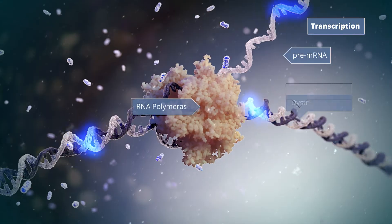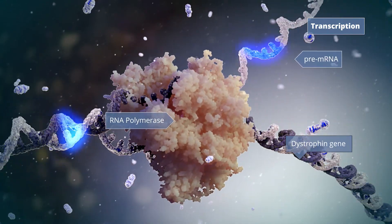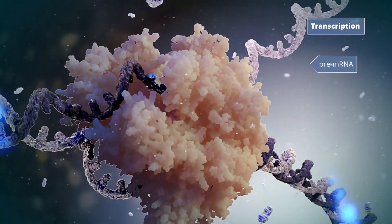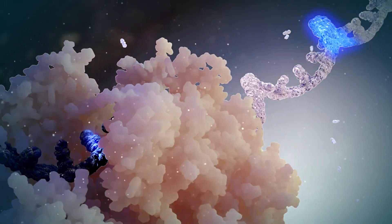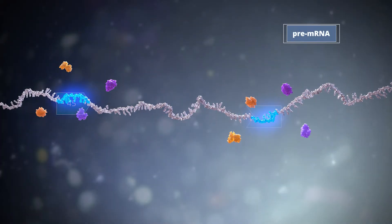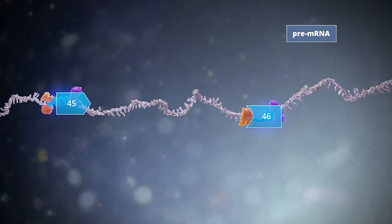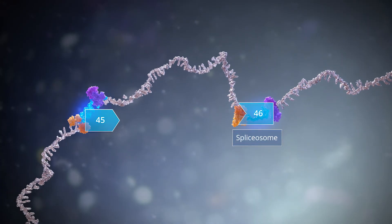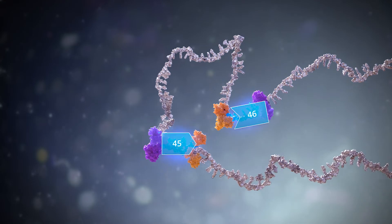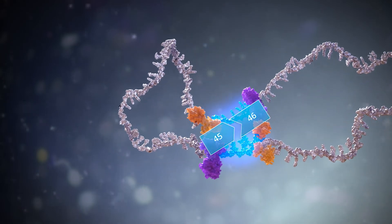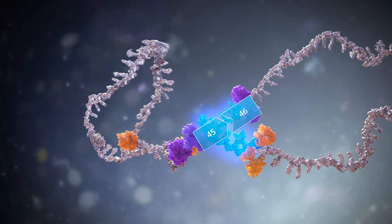To generate the dystrophin protein, the cell must first transcribe the entire length of the dystrophin gene into pre-mRNA. Within the cell, specialized cellular machinery known as the spliceosome binds specific sequences on the pre-mRNA and removes the introns to produce the mature mRNA.